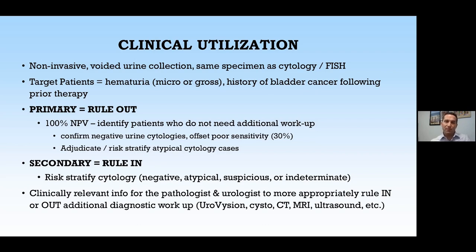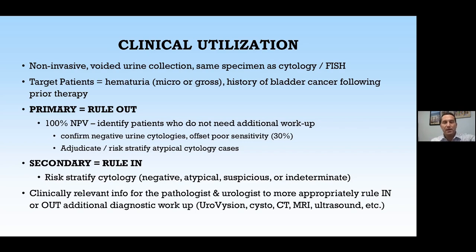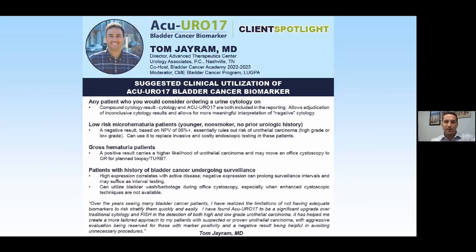Leveraging the high NPV, if patients have a negative urine cytology with a negative Uro 17, clinicians can confirm that patient is at very low or no risk of bladder cancer. Atypical cytology is a common, frustrating diagnosis for clinicians. Utilizing Uro 17, labs can adjudicate those cytologies — either downgrading the patient's risk profile or placing them in a higher risk bucket and triaging to other testing such as Provision FISH or cystoscopy.